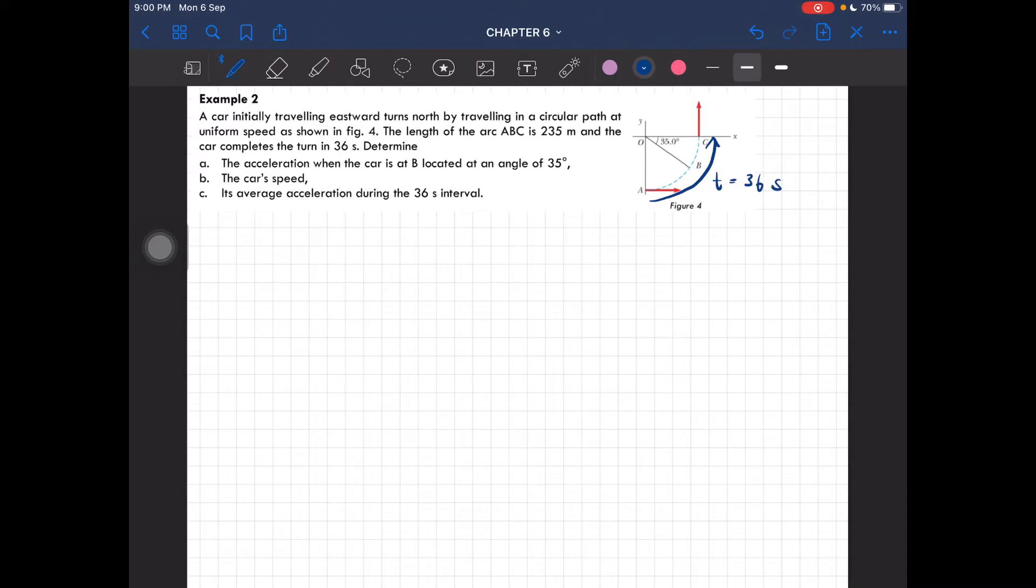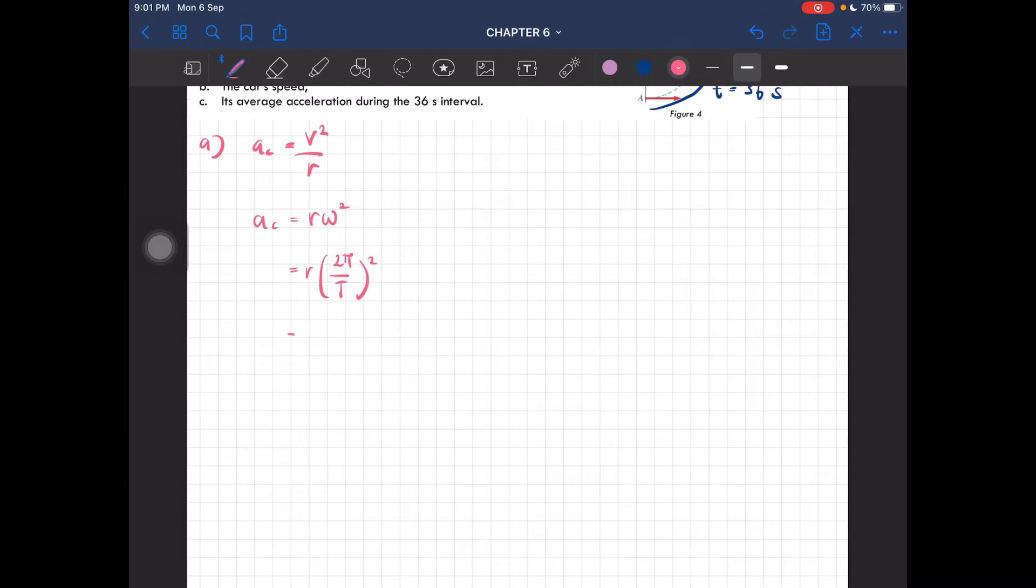We need to determine the acceleration when the car is at point B, located at an angle of 35 degrees. The centripetal acceleration is ac = v²/r, but we don't have v, so we use ac = rω² = 4π²r/t².